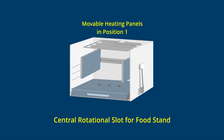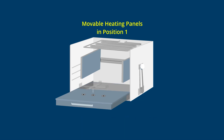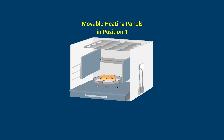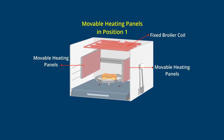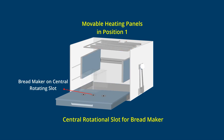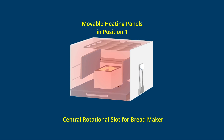Similarly, a food stand to support food holders with cakes or pizzas can be inserted in the central slot and rotated while receiving heat from the movable heating panels at the sides and the broiler coil at the top. The same central slot also supports a bread maker, eliminating the need for a separate bread making machine.